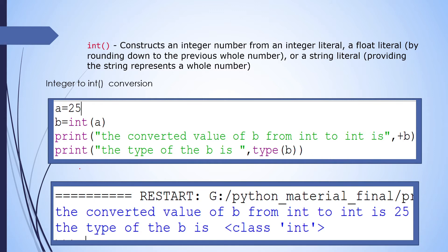The first conversion is integer to int conversion. We have a = 25, then b = int(a). The converted value of b from int to int is shown here. To identify the type of variable b, we use type(b). The type of b is int, because we have explicitly changed it using the int function.